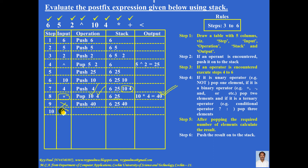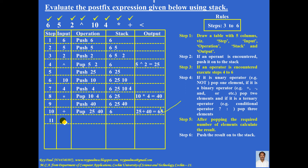Next is the plus operator — three things to be done. First, it's a binary operator, so pop two elements; the topmost elements are popped. After popping, the stack contains 6. Second, calculate the answer: left operand first — 25 plus 40 equals 65. Third, push the answer — input is not there because you are pushing the answer. Push 65; stack now contains 6 and 65.